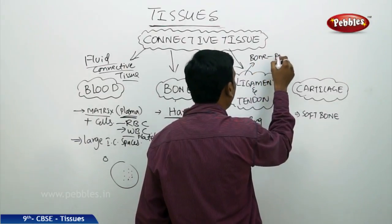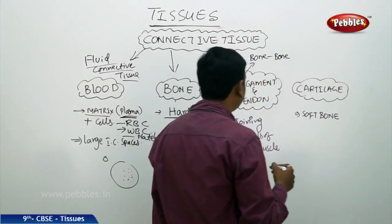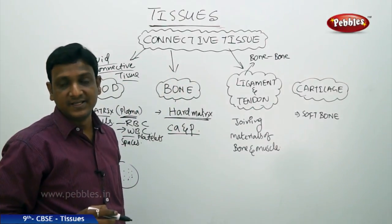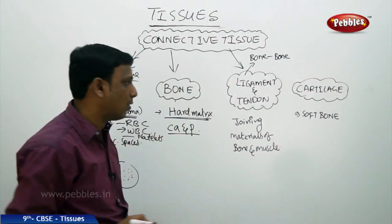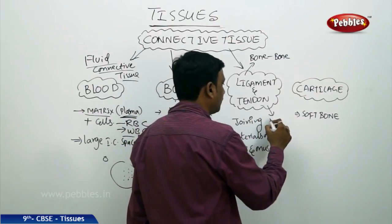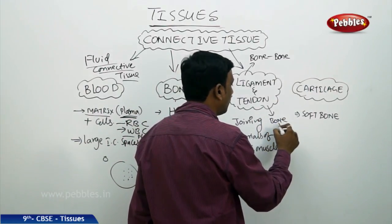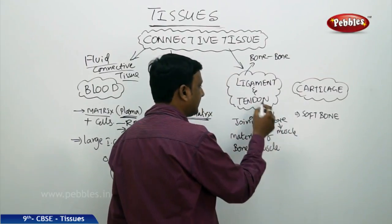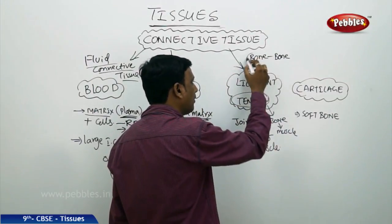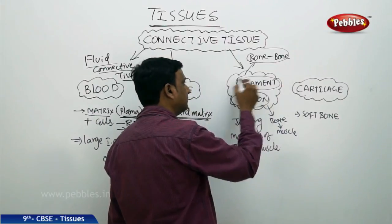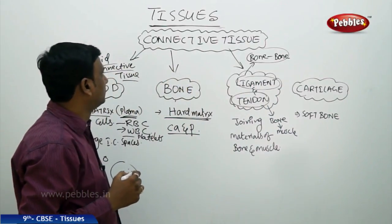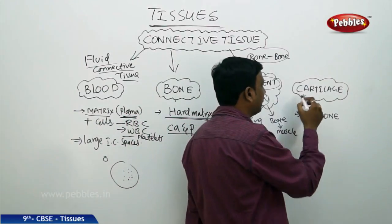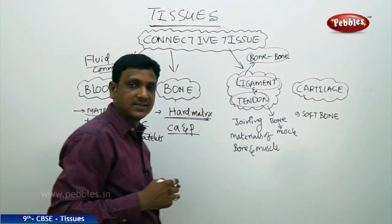A tendon is a material that joins a muscle to a bone — it attaches a muscle to bone. So bone and muscle are attached by tendons, while bone and bone are attached by ligament. These are the connective tissues known as ligaments and tendons.